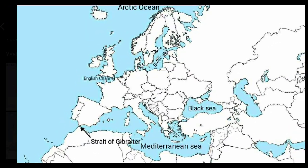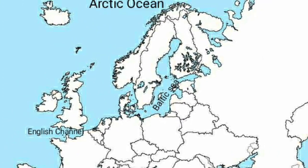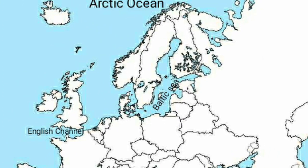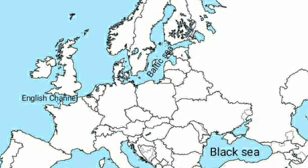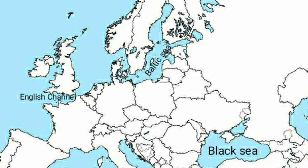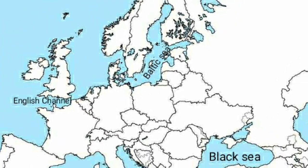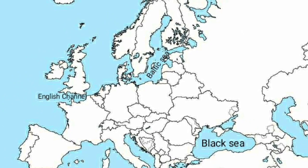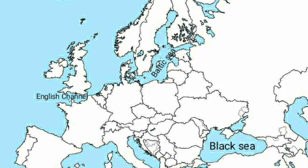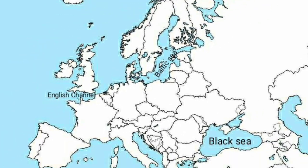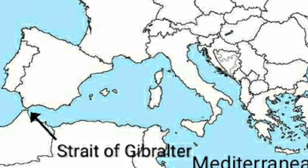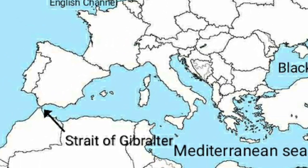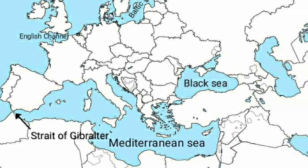In the extreme north, you can see we have the Arctic Ocean just above the entire European continent. Next, we have the Baltic Sea, which is located between the Scandinavian highlands and the Baltic states. Next, we have the English Channel, which lies between the British Isles and the European mainland. Next, we have the Strait of Gibraltar.